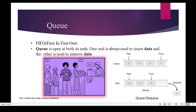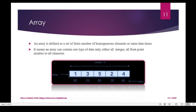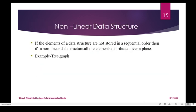We have four types of linear data structure: queue, stack, linked list, and array. Non-linear data structure — elements are not stored in sequential order. If the elements are not stored in a sequential order, then it is a non-linear data structure. All elements are distributed over a plane. Examples are tree and graph.